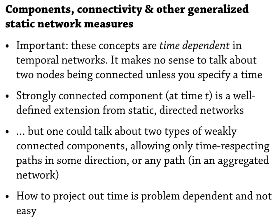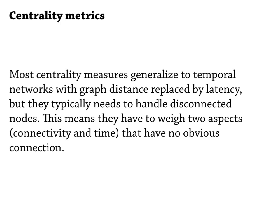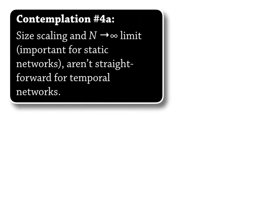How to project time is not easy. I recommend looking in the literature or thinking for yourself. There are always many ways of doing things, and there might not be one definitively best way. All classical centrality measures — betweenness, eigenvector centrality, closeness centrality — can be generalized to temporal networks, typically by replacing distance with latency. But they will measure slightly different things.